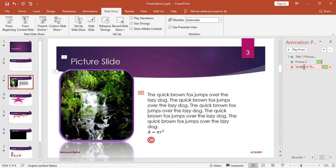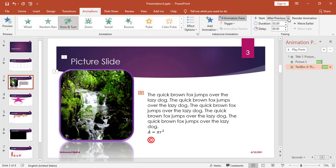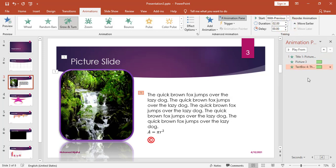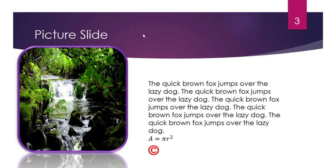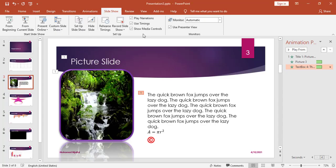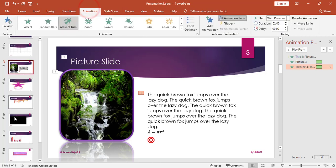Going to Slideshow from Current Slide, now I only need to click the mouse once to trigger the title animation, and after that the picture and text box appear automatically without any additional clicks. I can also make the picture and text box appear at the same time by setting the text box animation to With Previous instead of After Previous, and giving them the same duration. Now in the slideshow, clicking once makes the title appear, and then the picture and text box appear simultaneously.